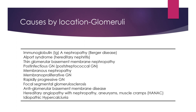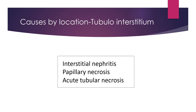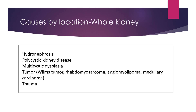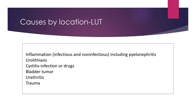Looking at causes by location, as beautifully given in Nelson, the list is extensive. From the glomeruli, the important cause to remember is post-streptococcal glomerulonephritis; apart from that, remember IgA nephropathy, Alport syndrome, thin basement membrane nephropathy, and secondary causes such as SLE or other systemic disorders. For tubular/interstitium: interstitial nephritis and acute tubular necrosis. Anatomical: polycystic kidney, multicystic dysplasia, tumors — especially Wilms tumor — or trauma.